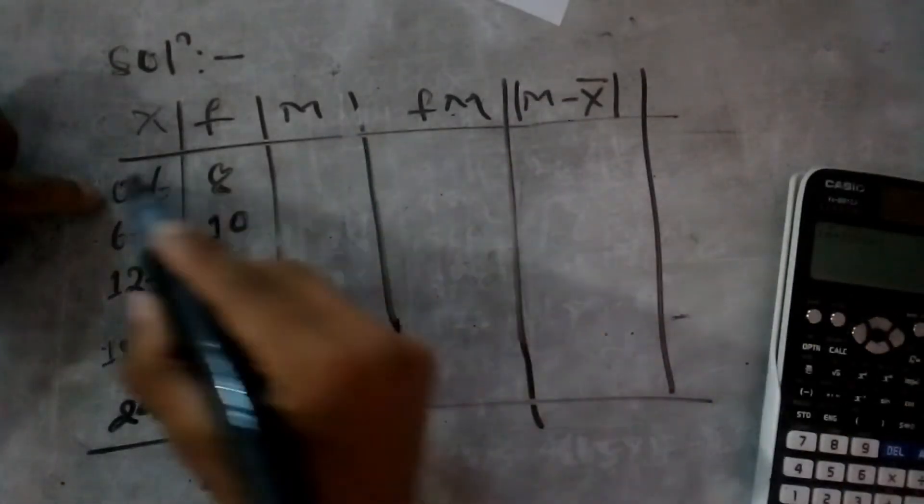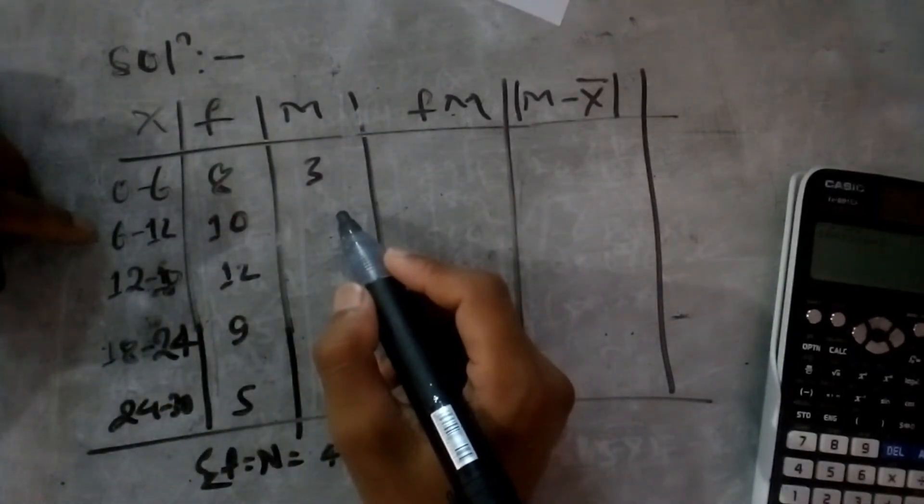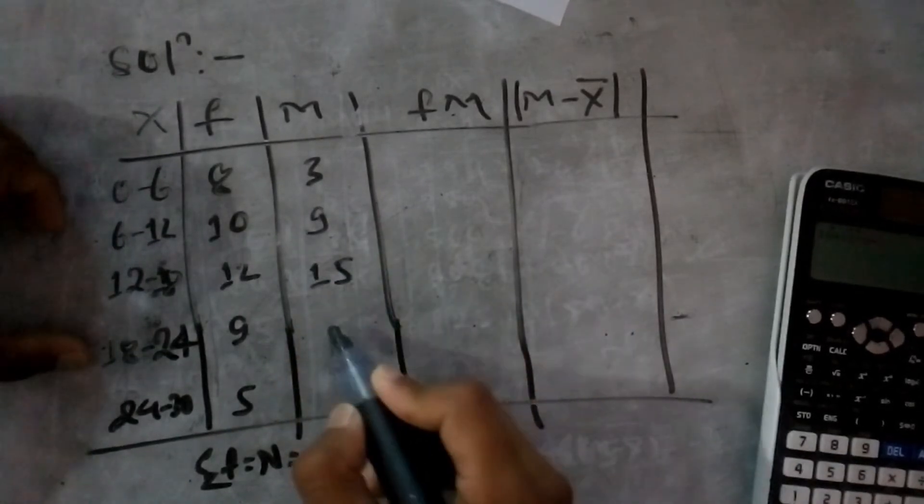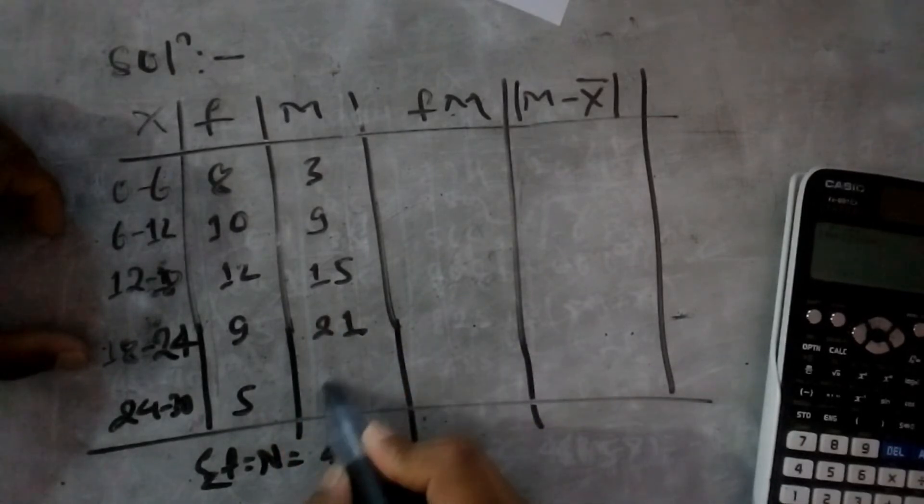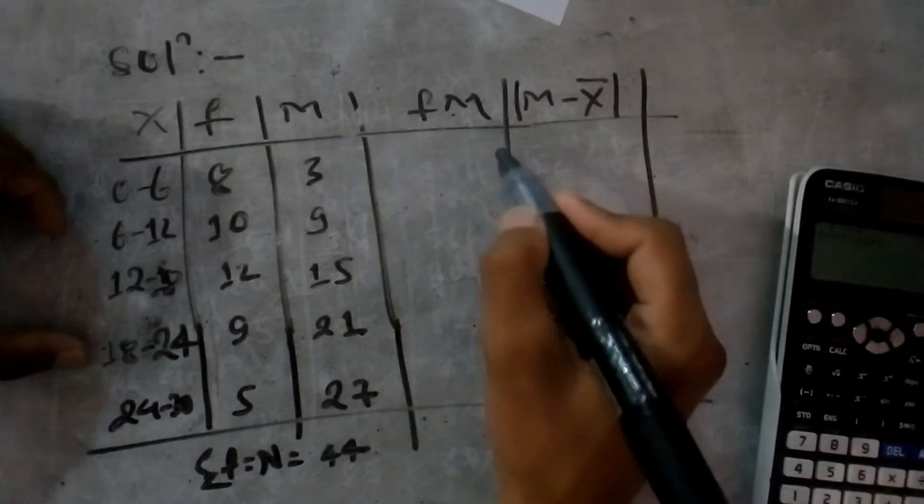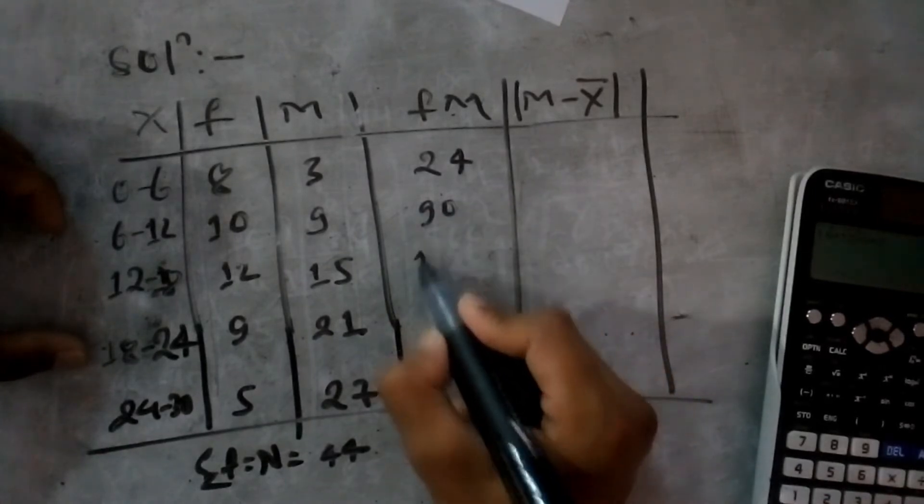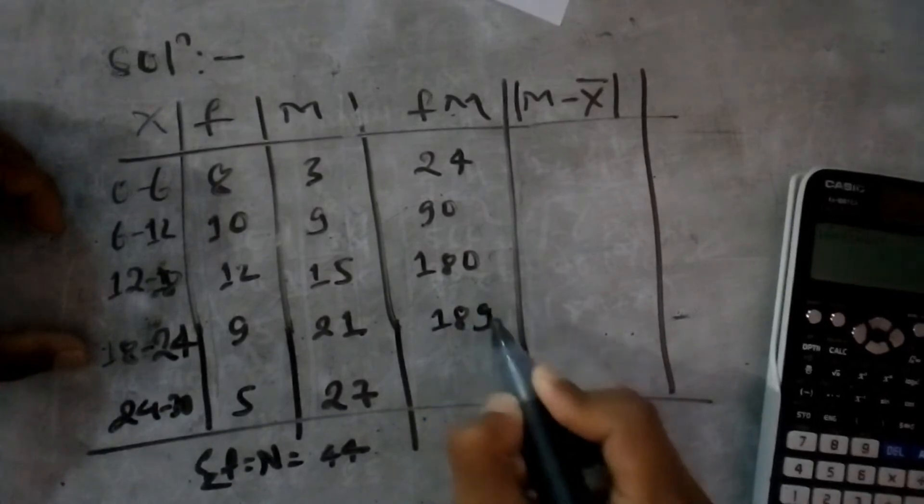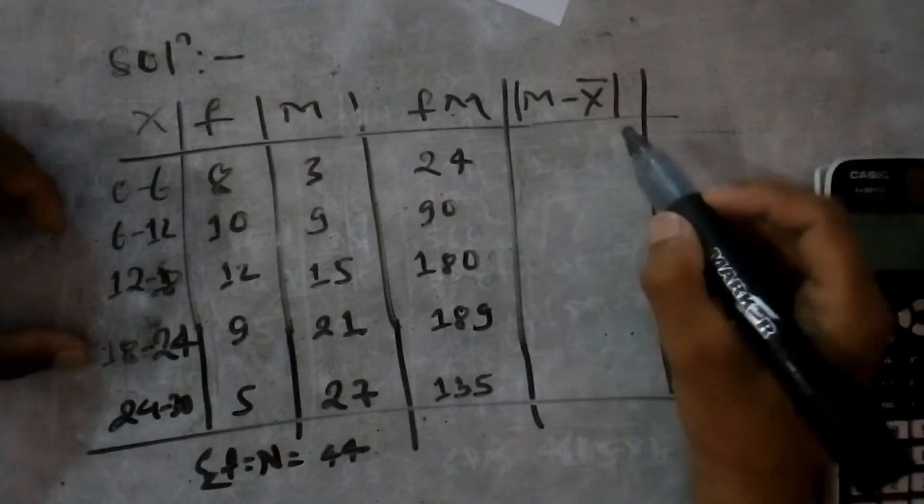The midpoint values are 3, 9, 15, 21, and 27. Multiplying by frequencies: 24, 90, 180, 189, and 135.